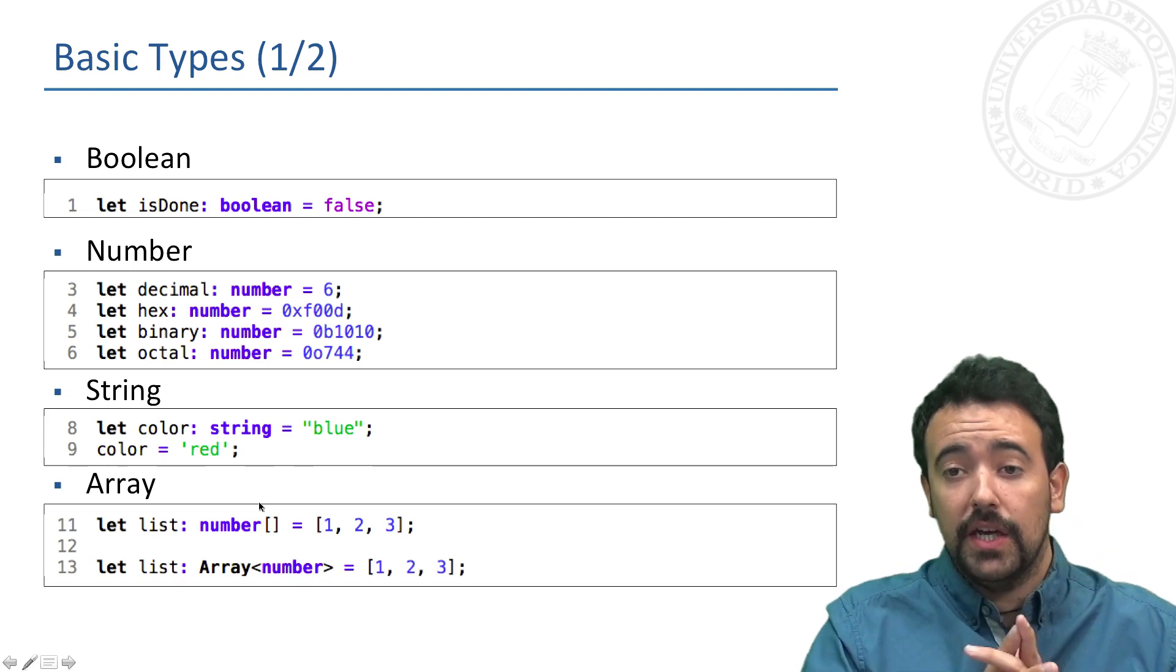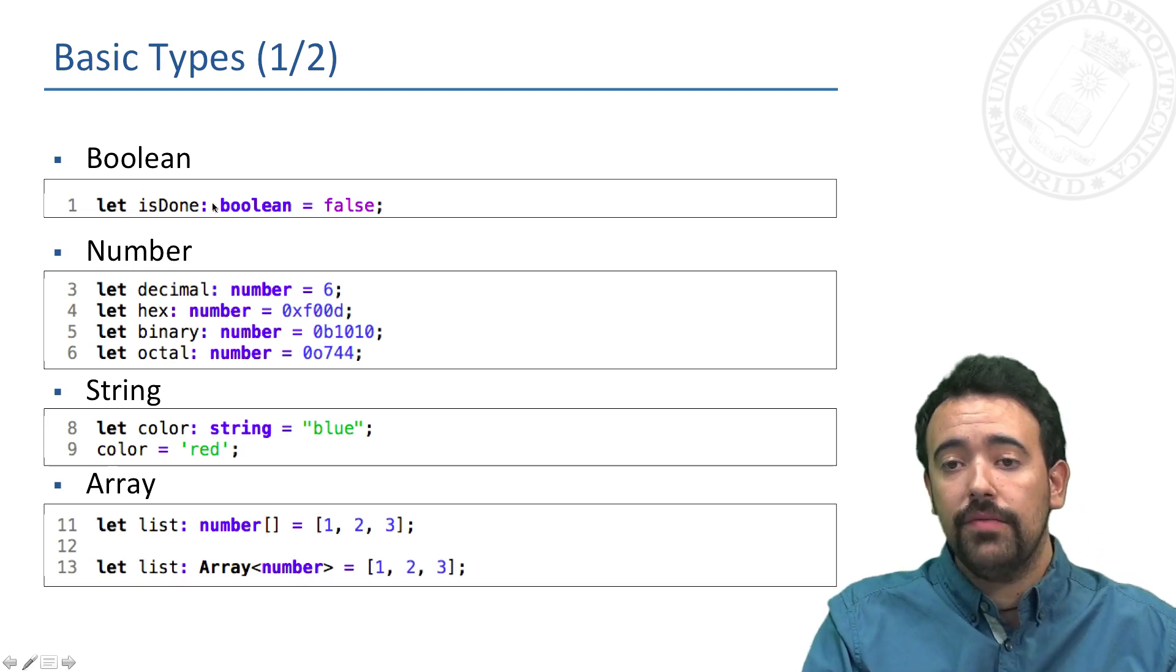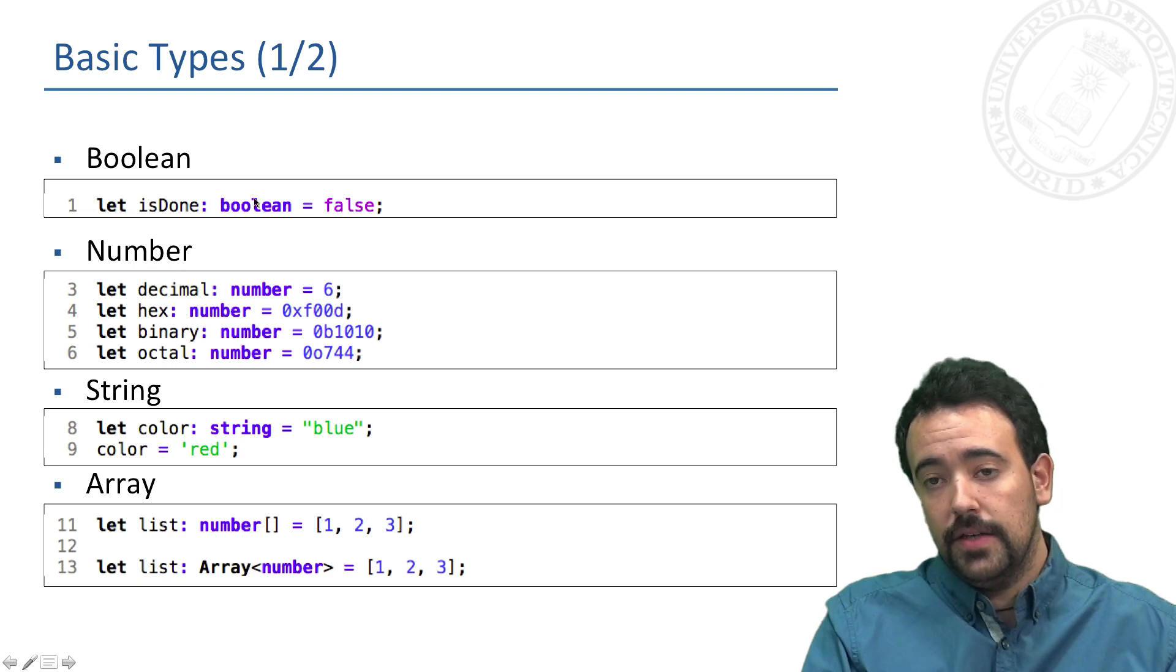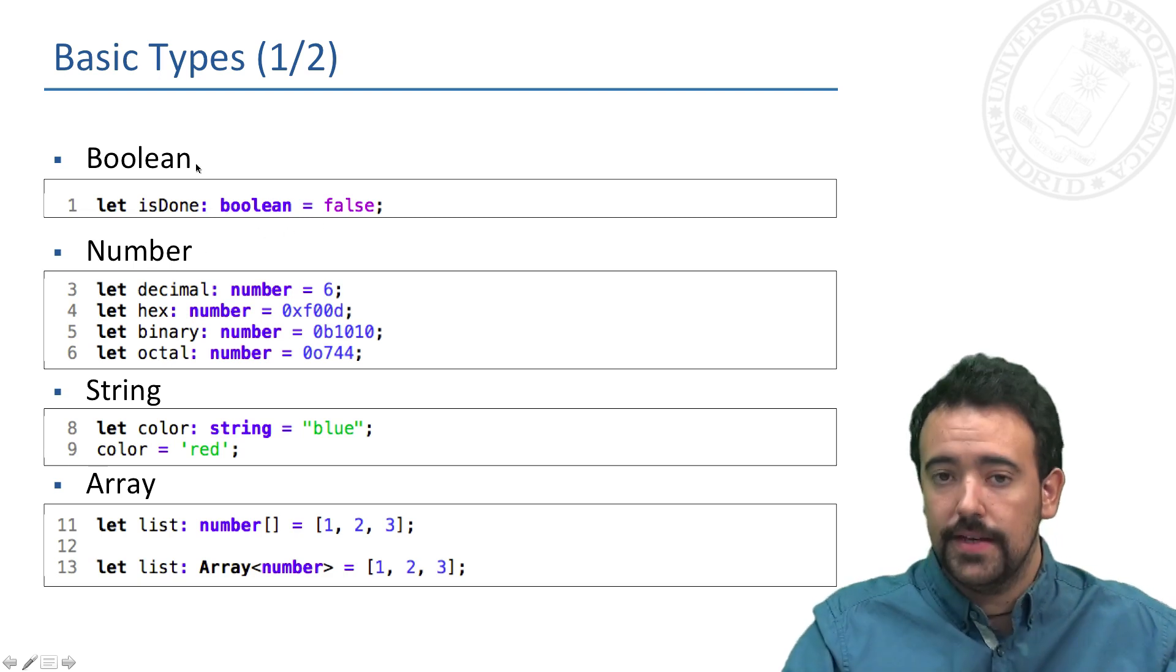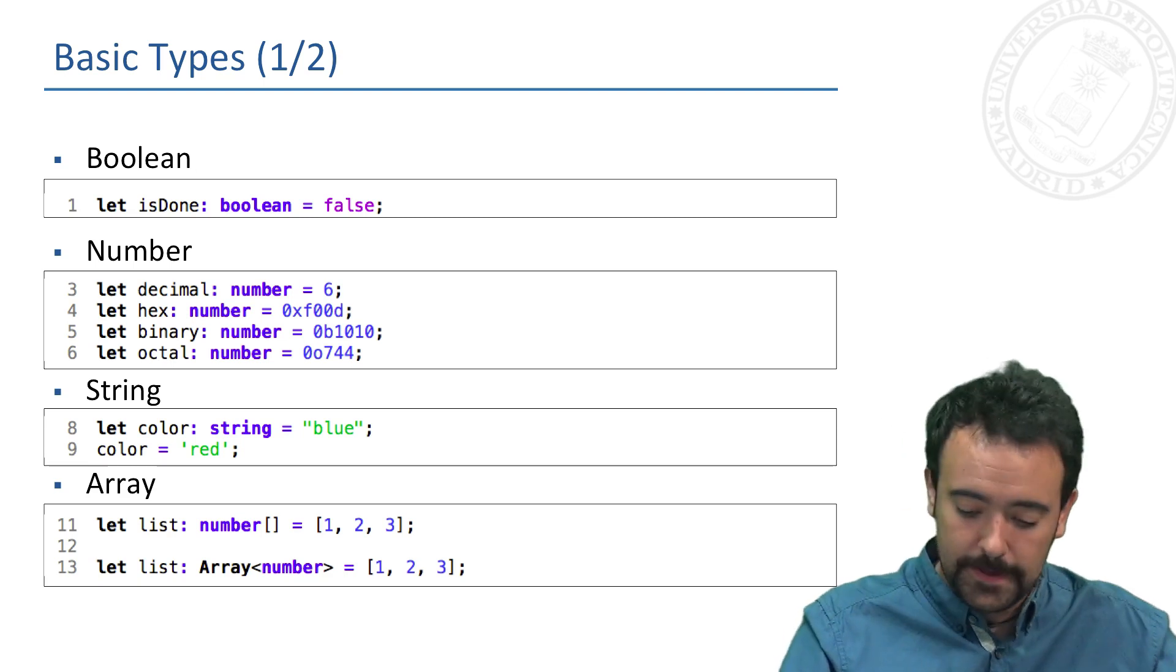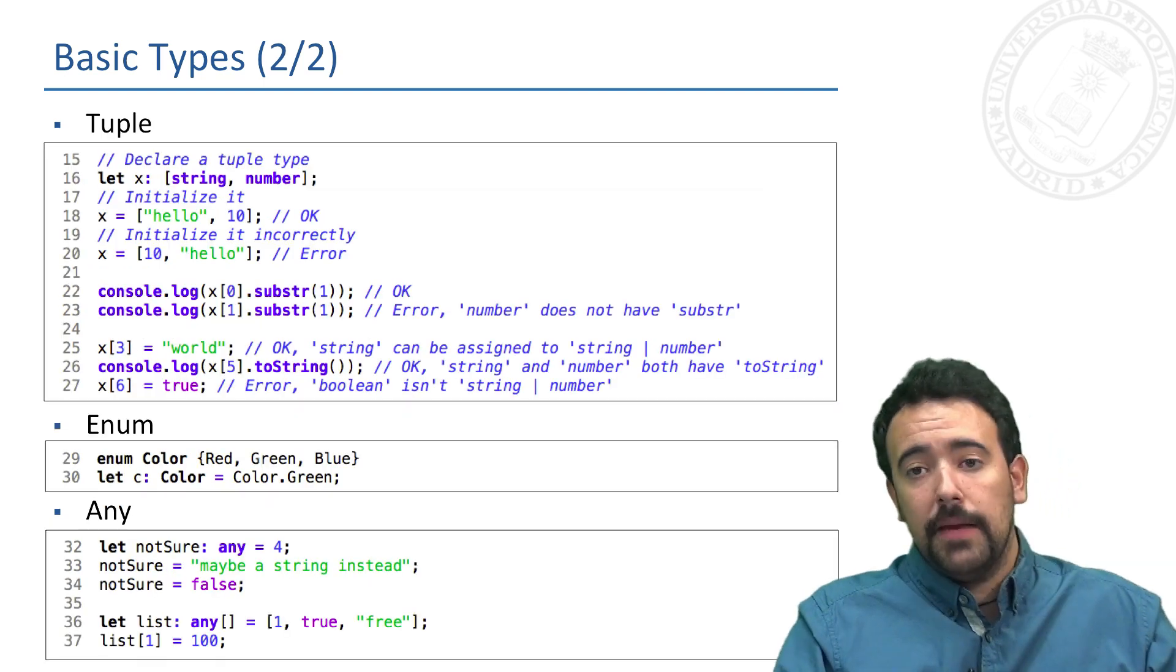As you can see, we always include the name of the var and then the type of the var we are creating. Some basic types, for instance very useful: